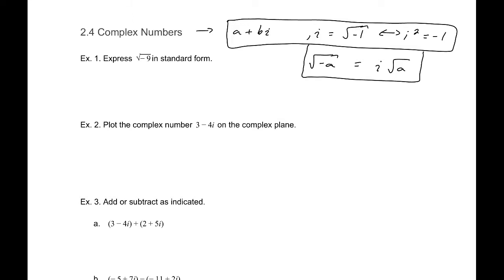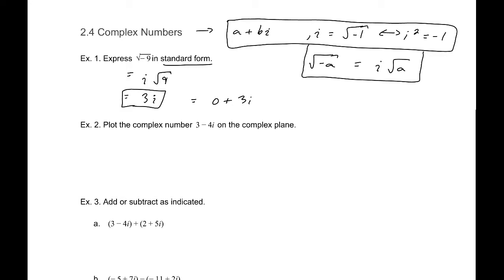For example, express the square root of negative nine in standard form. That would be i times the square root of nine, which equals 3i. The standard form of a complex number is a plus bi, so this is zero plus 3i, where a equals zero and b equals three.